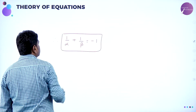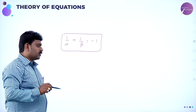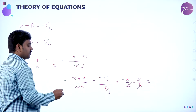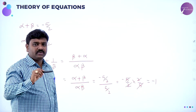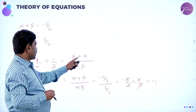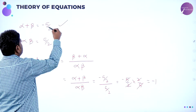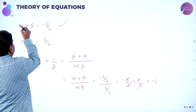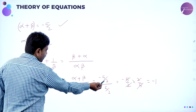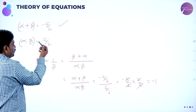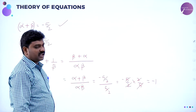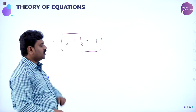Therefore 1 by alpha plus 1 by beta equals minus 1. We took LCM as alpha into beta, cross multiplied to get beta plus alpha, which equals alpha plus beta. Substituting alpha plus beta equals minus 5 by 2 and alpha into beta equals 5 by 2, they cancel to give minus 1.